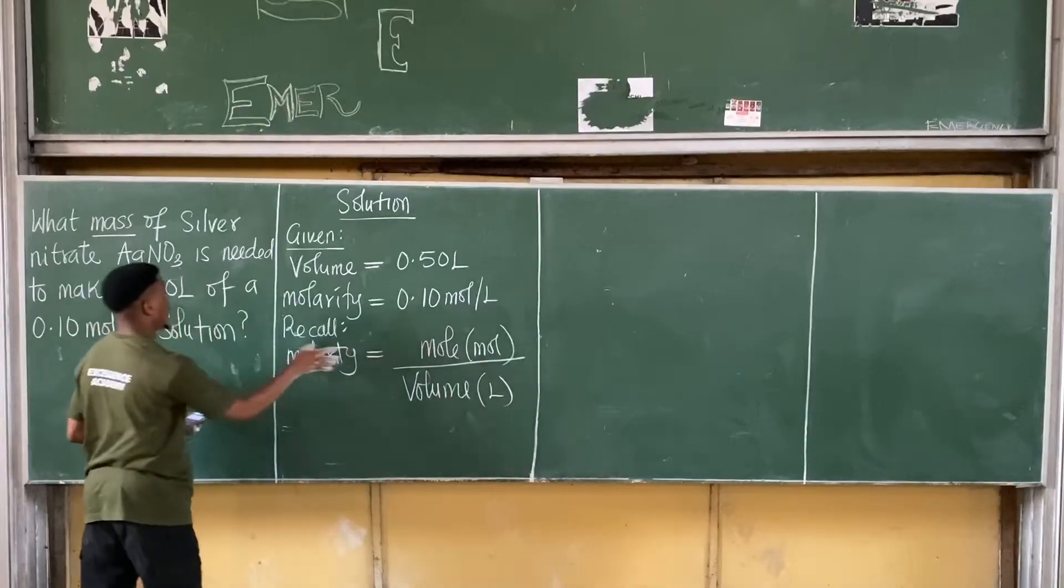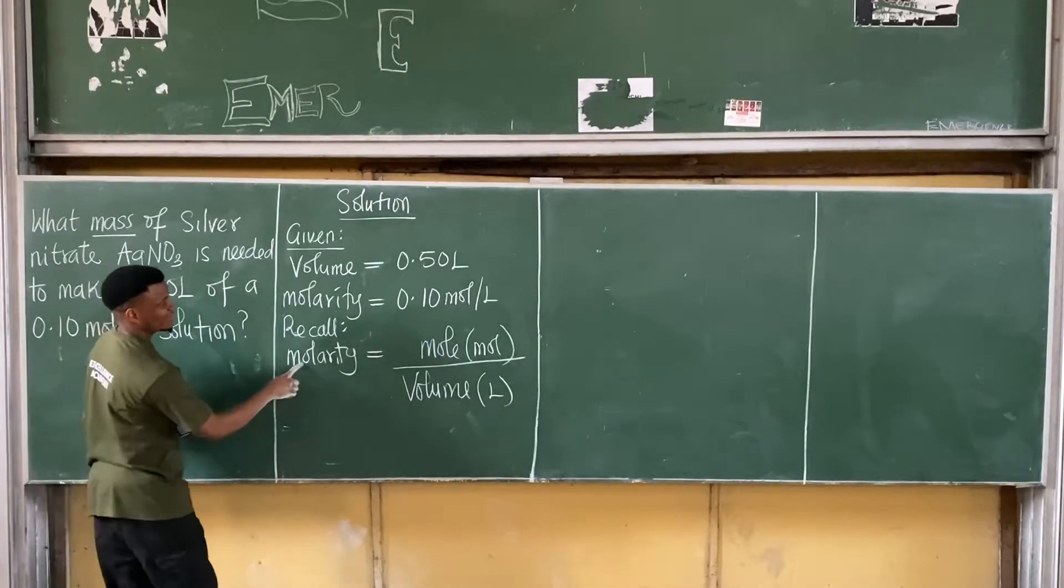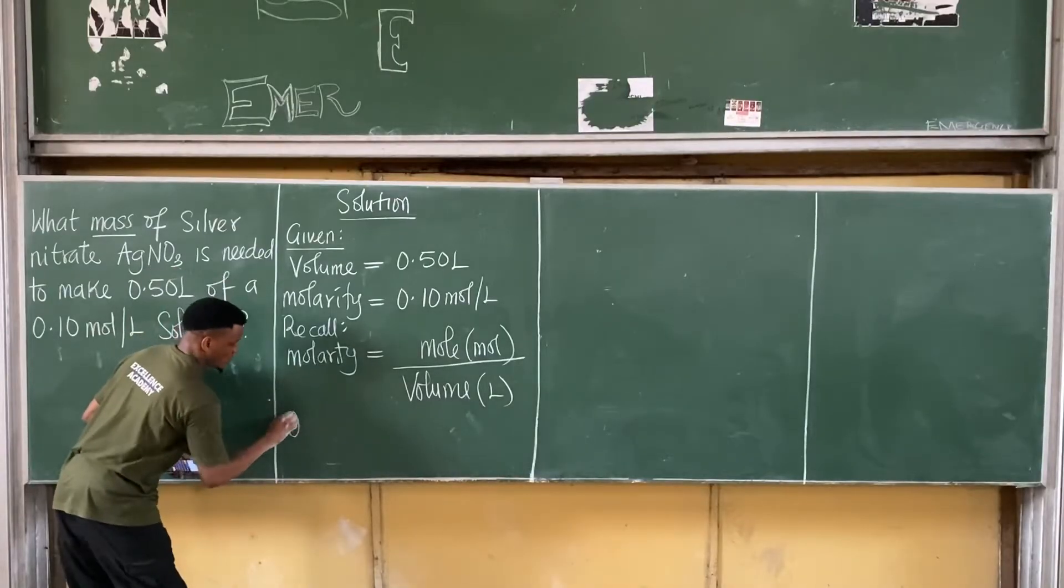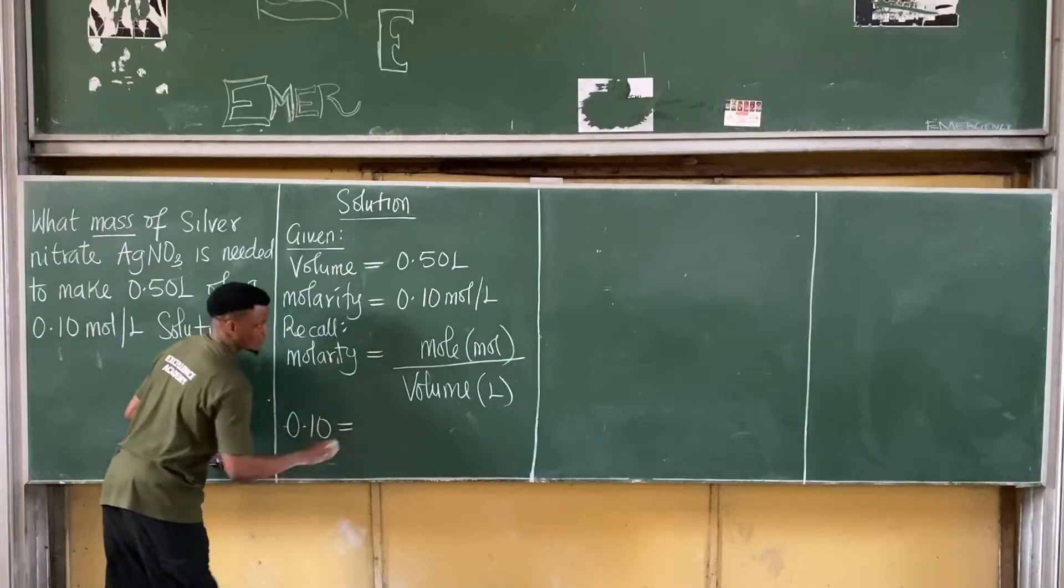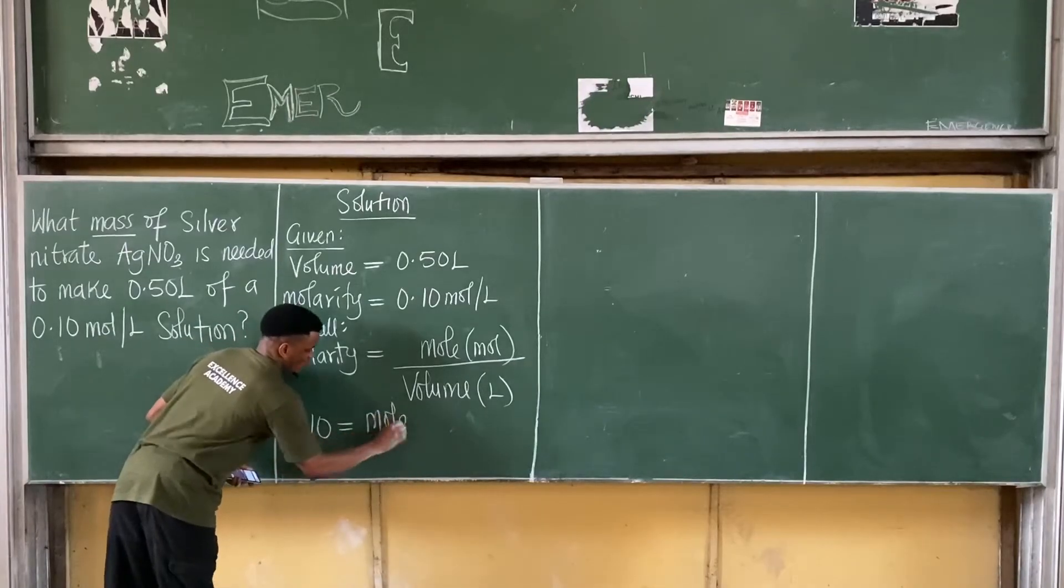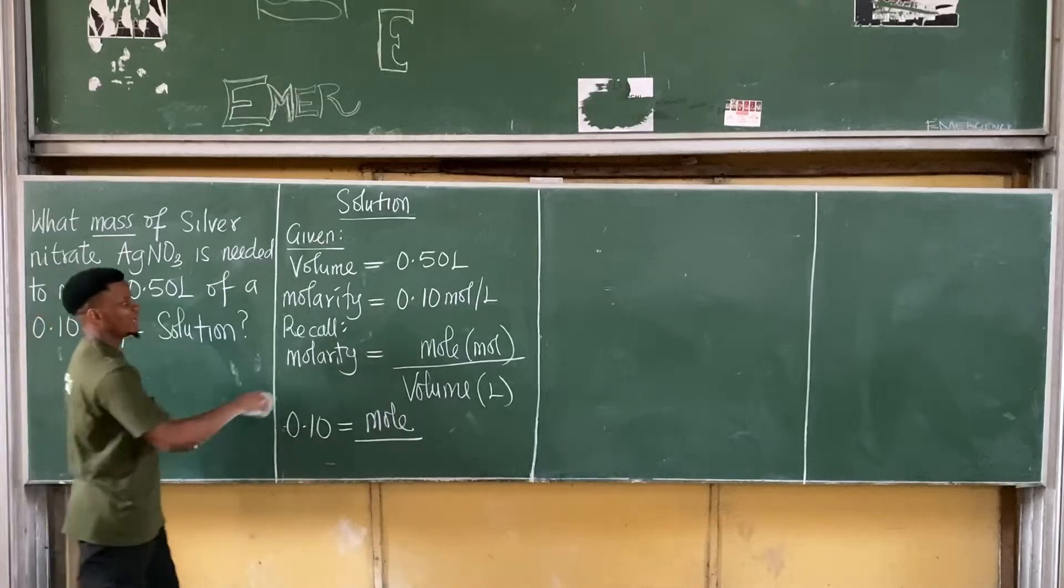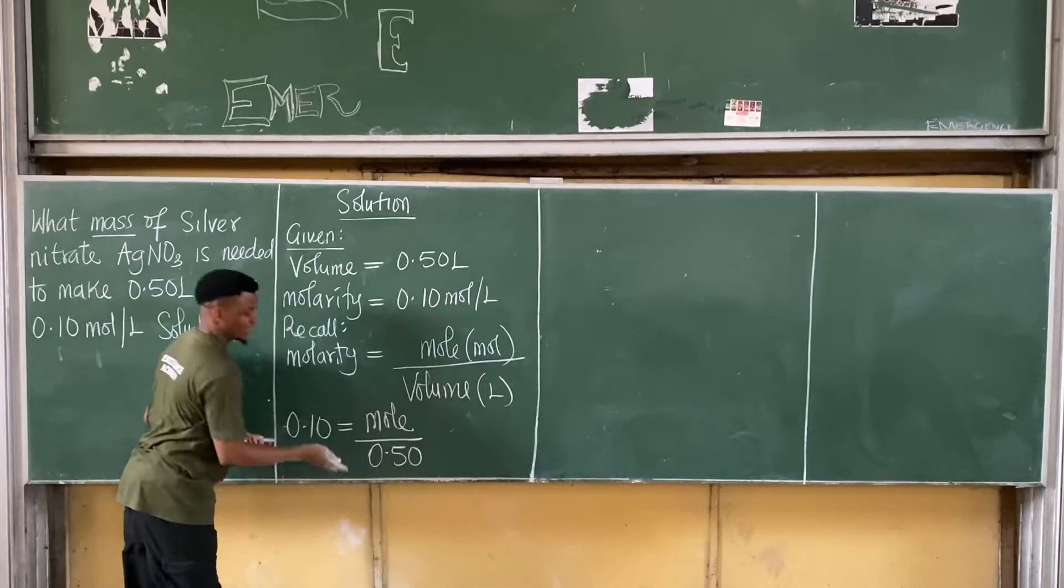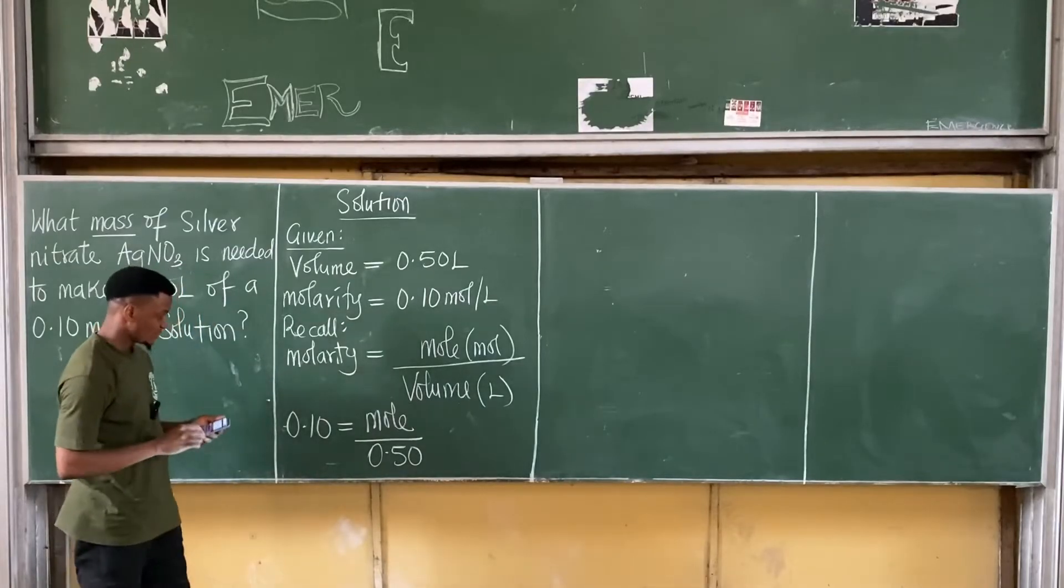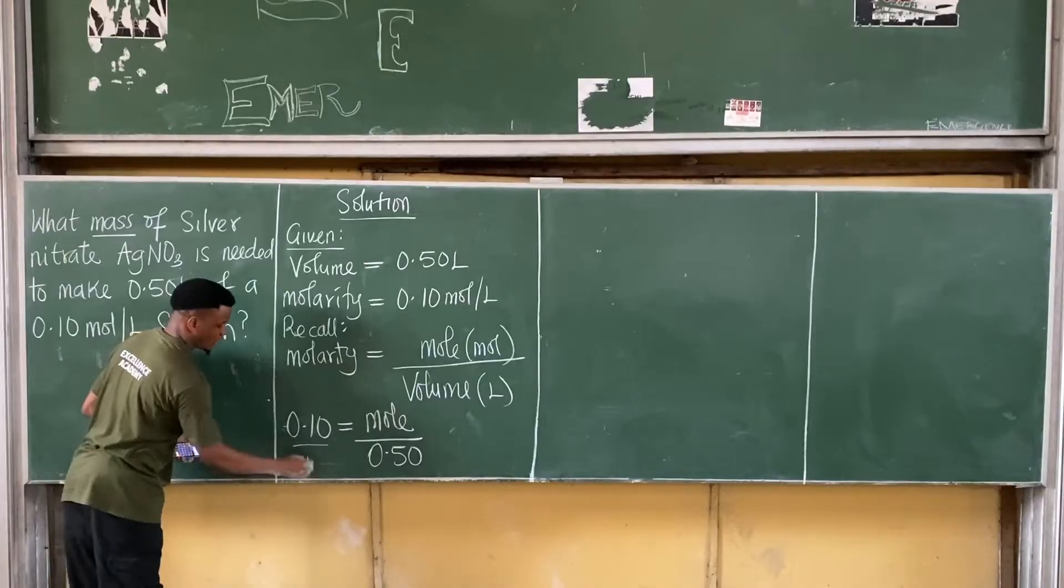we can find the moles of silver nitrate. The molarity value is 0.10 or simply 0.1 is equal to the moles value which we don't have all over the volume. The volume here is 0.50 or simply 0.5. Any of them works. To solve this, I will have to cross-multiply all over 1.